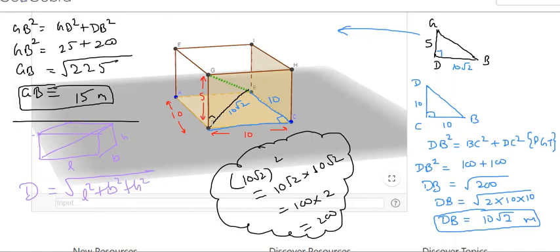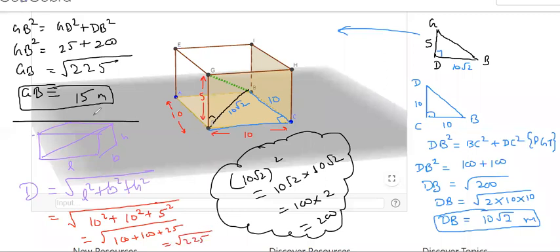What you need to do is basically find diagonal equals L square plus B square plus H square. Let me just do it quickly and check whether my answer was correct or not. Length was 10 square, breadth was 10 square, height was 5 square. 100, 125, 225. Can you see that? And answer is 15. Did you find it easy now?